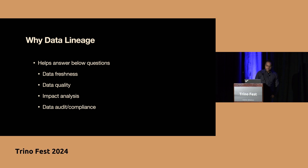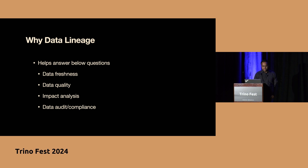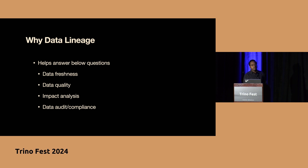Why do we need data lineage? Data lineage is quite crucial for data governance because it helps answer some key questions. One key question it answers is data freshness. You might have come across scenarios where you're looking at a dashboard trying to find out whether the data is stale or fresh. Without any knowledge about the lineage, it's very hard to track whether the data you are looking at is fresh or not.